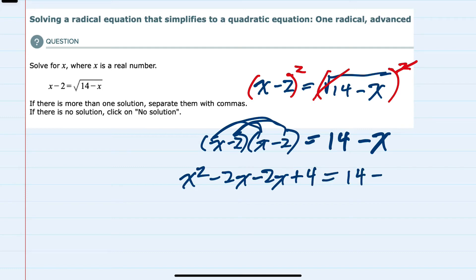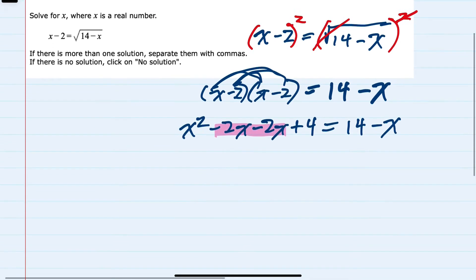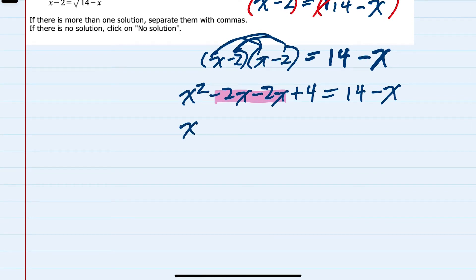And 14 minus x on the right. I can then simplify by combining like terms. On the left hand side we would now have x squared minus 4x plus 4 equals 14 minus x.